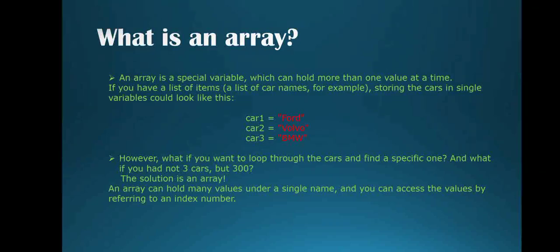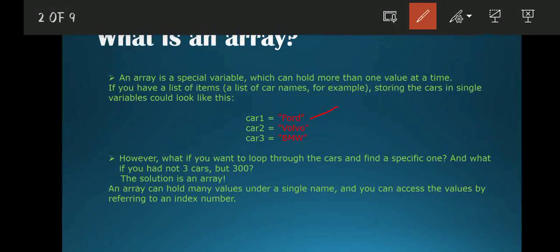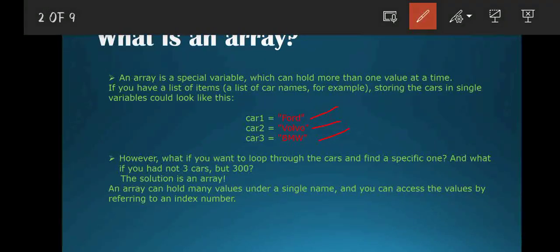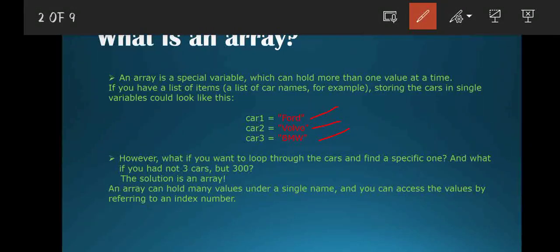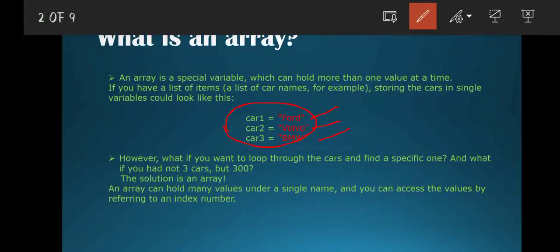For example, if you have a list of cars, using variables you would need: car1 = 'Ford', car2 = 'Volvo', car3 = 'BMW' — three separate variables for three values. Instead, using an array with a single name like 'cars', you can store Ford, Volvo, and BMW all at once, storing multiple values under one name.